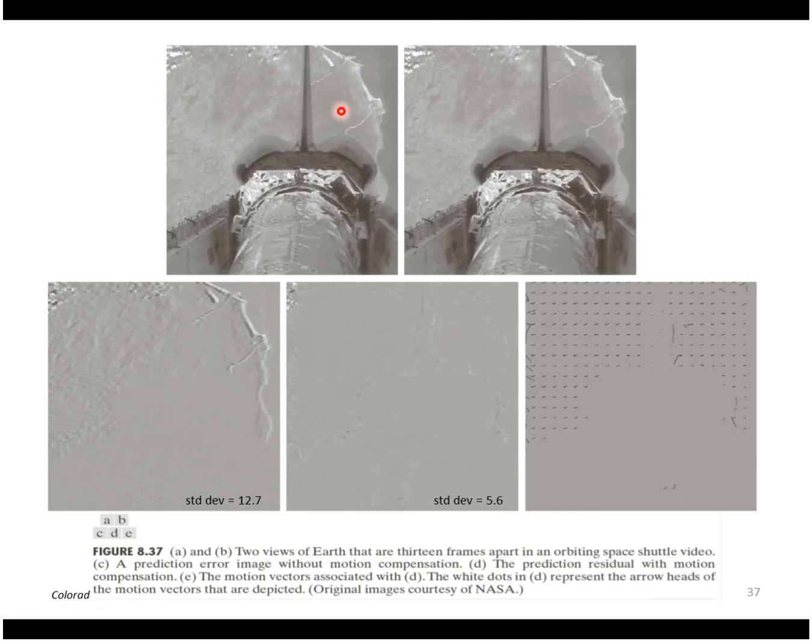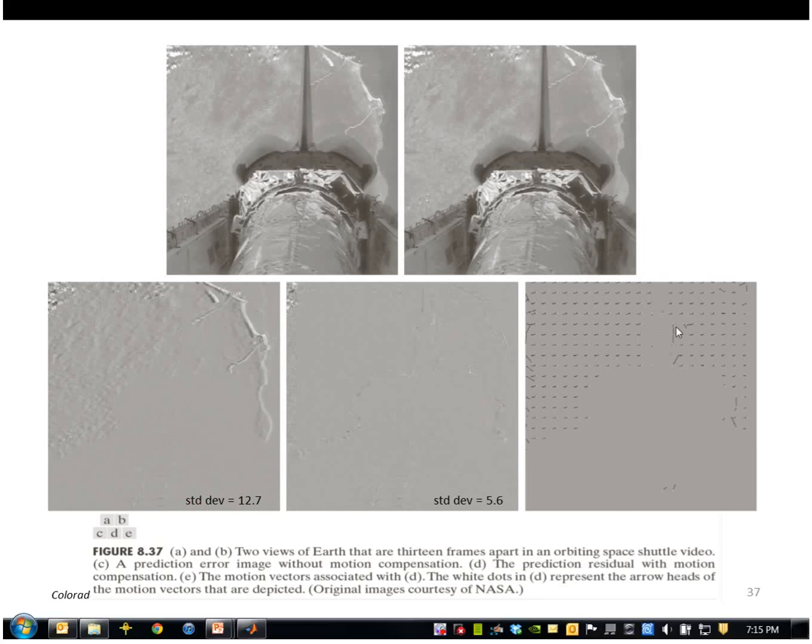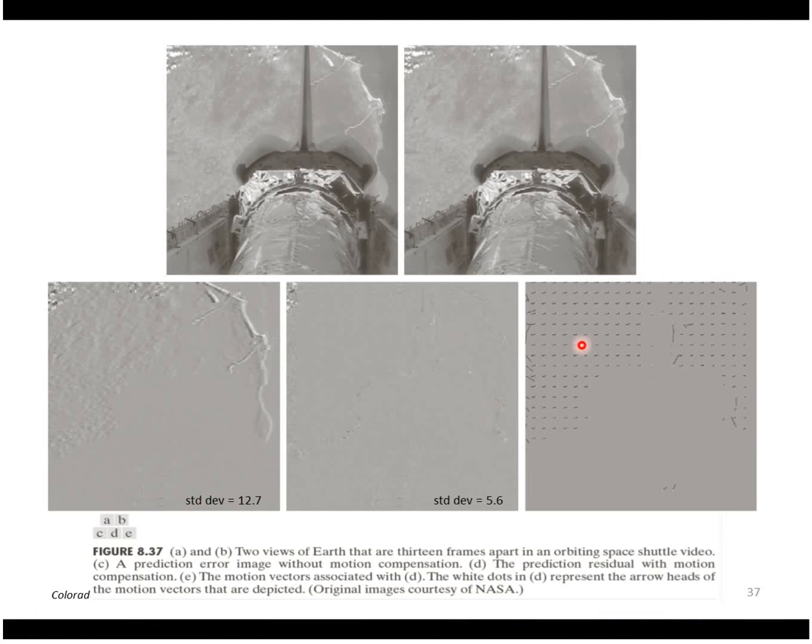So here are two images in that sequence. Mostly things have not moved a lot. But here is the error if we do not use motion compensation where we don't predict the motion. And here is the error where we do predict the motion. So standard deviation is much lower here than here. And this just shows the motion vectors that were estimated in order to compute this.